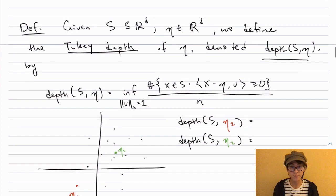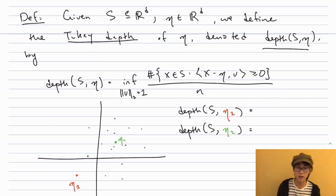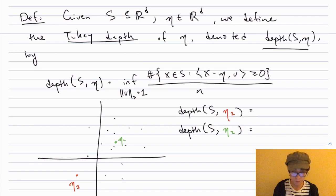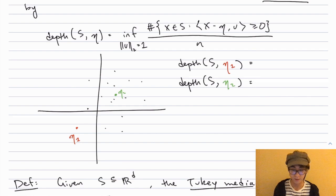We'll do this in two steps. First, define the notion of Tukey depth. Definition: given a finite set of points S in ℝ^d and a point η (not necessarily in S), the Tukey depth of η is defined as follows. Take the set of all half-spaces which go through η and find the one which contains the fewest points in S. The depth of η is the fraction of points in that half-space over n. Intuitively, if η is on the outside of S, it's easy to find a half-space containing no points in S. If η is deep within S, you can't find a half-space with very few points.